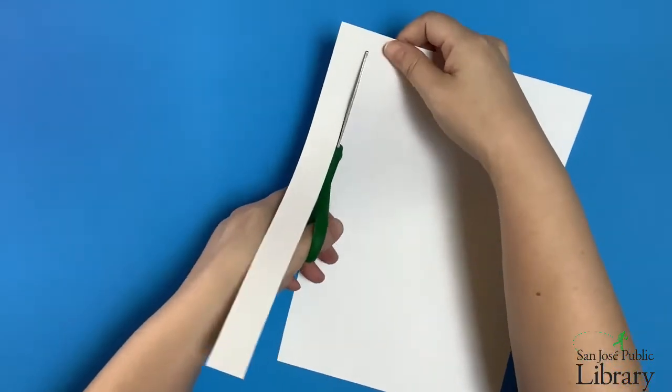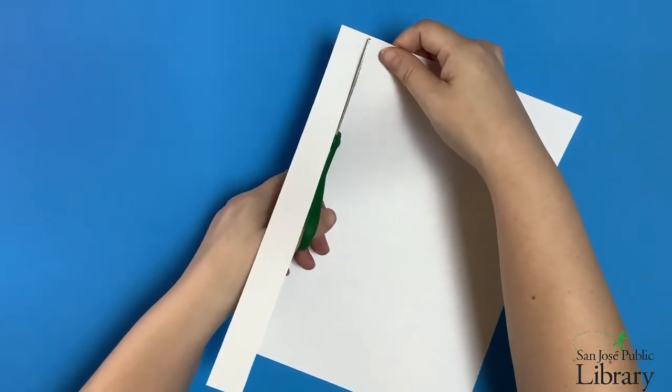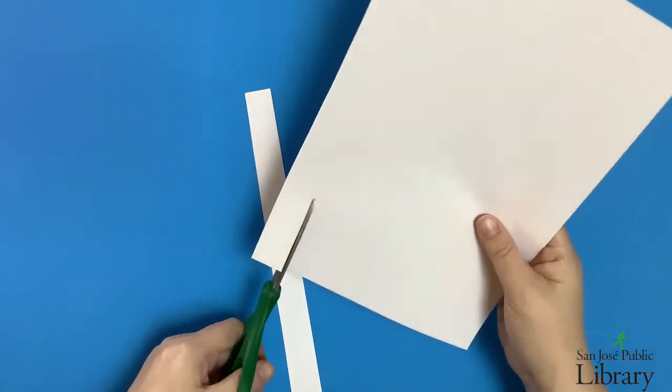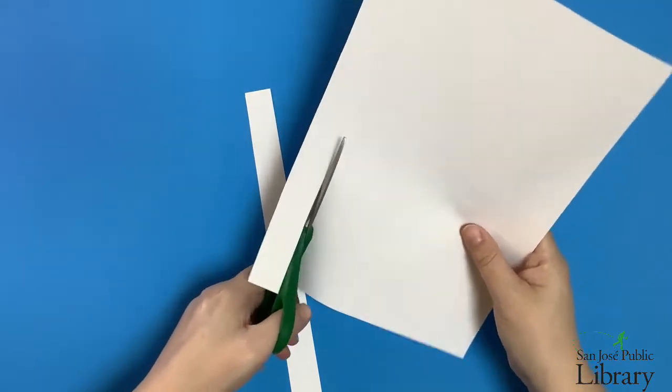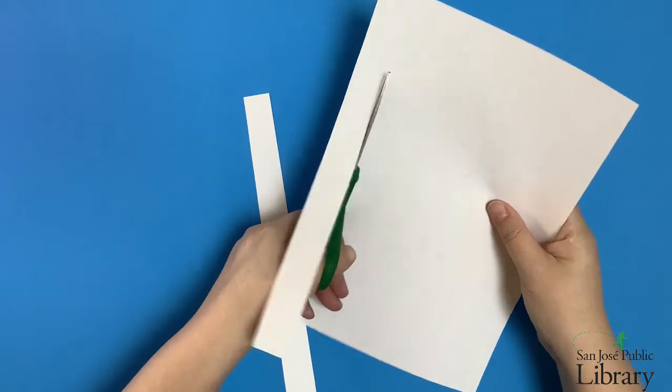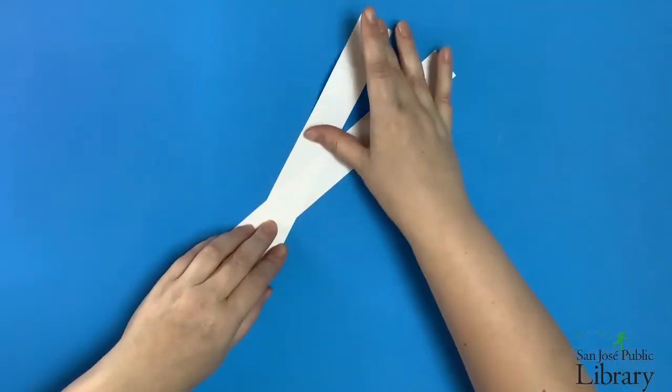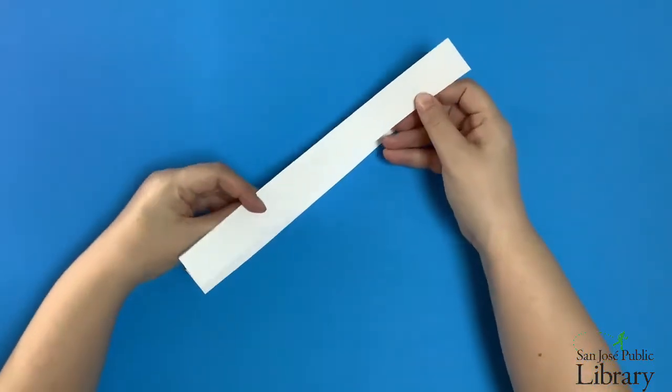But you may need to cut a second strip of paper because the wider your strip, the longer it will need to be. You can join two strips end to end to make a longer strip of paper. I'm actually going to cut a second strip myself, but I'm going to use that to talk about the Mobius strip before we start on our Hexaflexagon.